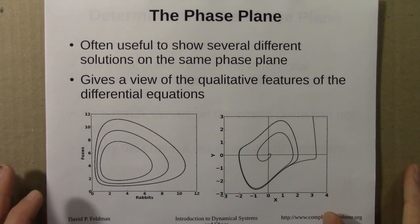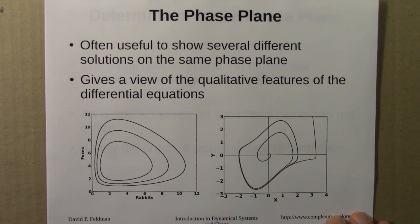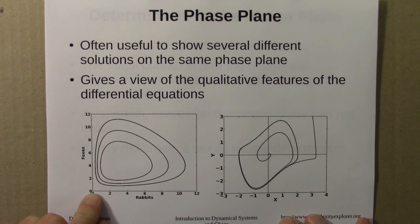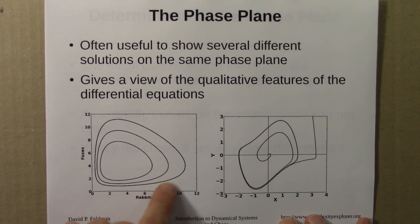It's often useful to show several different solutions on the same phase plane. If there are multiple equilibria, maybe show those. That's sometimes called a phase portrait. It gives an overall view of the qualitative features of the differential equations, the long-term fate of orbits. This would be the phase portrait for the Lotka-Volterra system. For different starting values of rabbits and foxes, we get different cycles. In all cases, we have cycles.